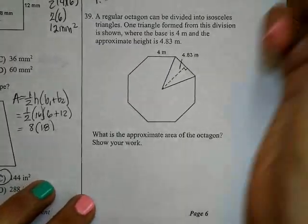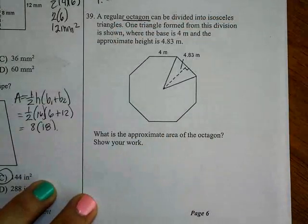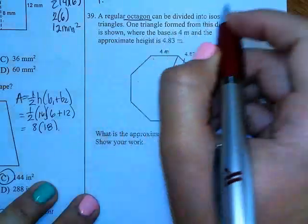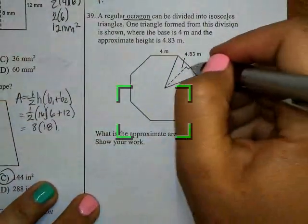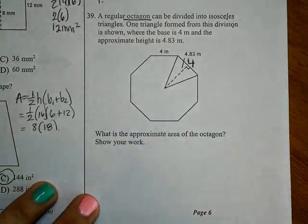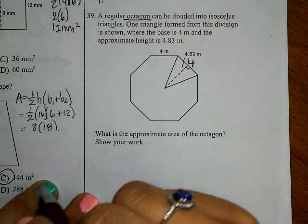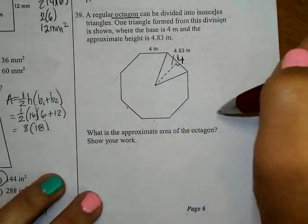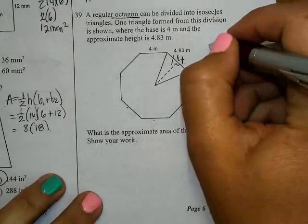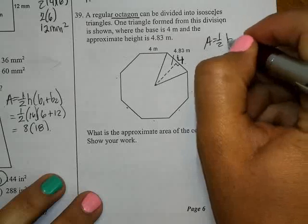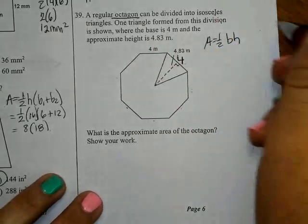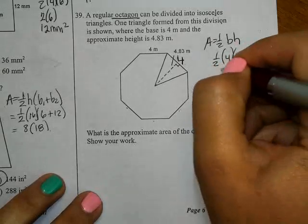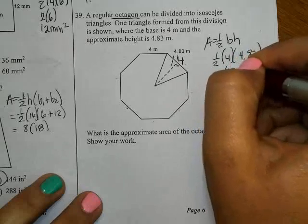A regular octagon can be divided into isosceles triangles. One triangle formed from this division is shown where the base is 4 and the approximate height is 4.83. What's the approximate area of the octagon? Well, the octagon has 8 sides. So I'm going to find the area of 1 triangle and multiply it by 8 at the end. Area equals one-half base times height. Half of 4 times 4.83, 2 times 4.83, gives me 9.66.